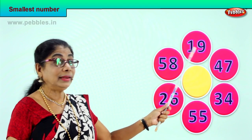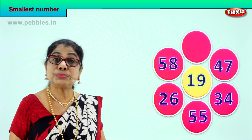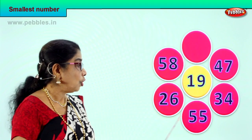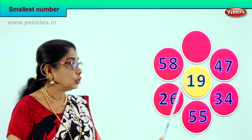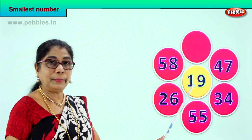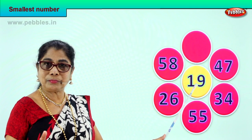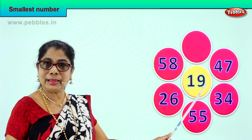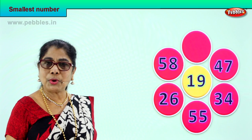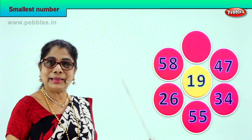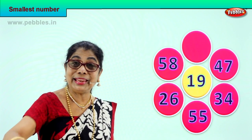Certainly 19 has one ten in the tens place — 1 and 9, 19. That is the smallest of all the numbers. So we take and put it in the middle here. Only one ten: 19 is the smallest among these numbers.